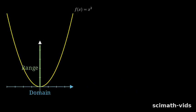For f(x) equals x squared, any real number can be an input. So, the domain is all real numbers. The range is all non-negative numbers. Outputs can't be negative.